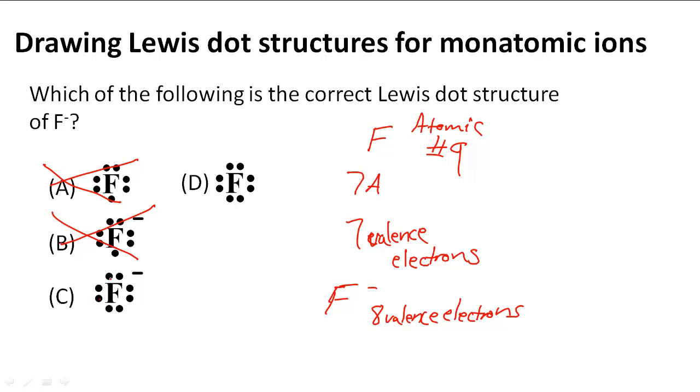C though shows us 1, 2, 3, 4, 5, 6, 7, 8 valence electrons and also the negative symbol. So this one is the correct answer.